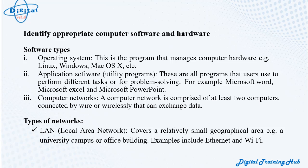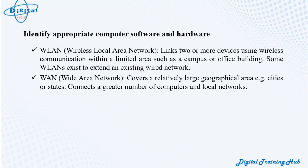A computer network is comprised of at least two computers, connected by wire or wirelessly, that can exchange data. Types of networks include WAN (Wide Area Network), which covers a relatively large geographical area such as cities or states, and connects a greater number of computers and local networks.